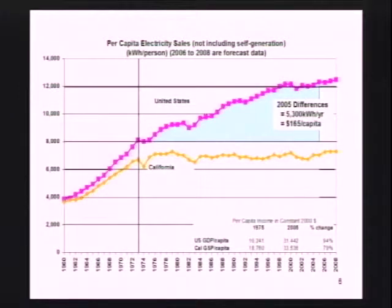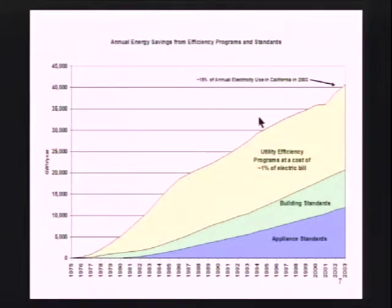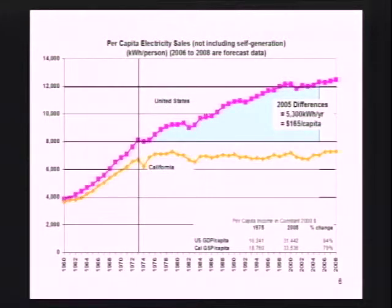We Californians do have something to be proud of, but we have to make some disclaimers. Of this savings, only about a third is standard improvements in efficiency. About a third is that our electricity is more expensive — we don't have coal and have always had an environmental approach. And thirdly, there's what I call the Camelot effect — the weather, at least for the first 20 years, was sublime along the coast. About a third of this effect is straight efficiency, and that's all I want to claim.